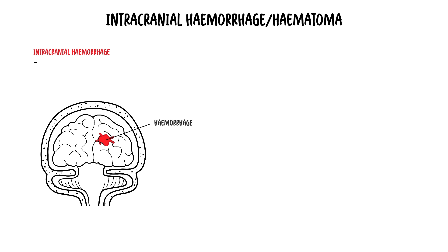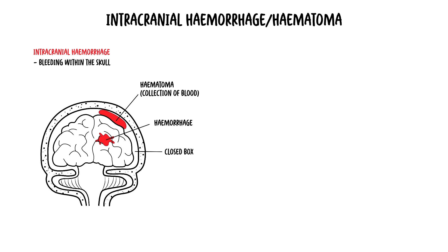The first clinical case we will discuss is an intracranial hemorrhage or hematoma. Hemorrhage means bleeding within the skull. Hematoma is a collection of blood within the skull as a result of hemorrhage. Because the cranial cavity is effectively a closed box, an intracranial hemorrhage often leads to a rapid increase in intracranial pressure.